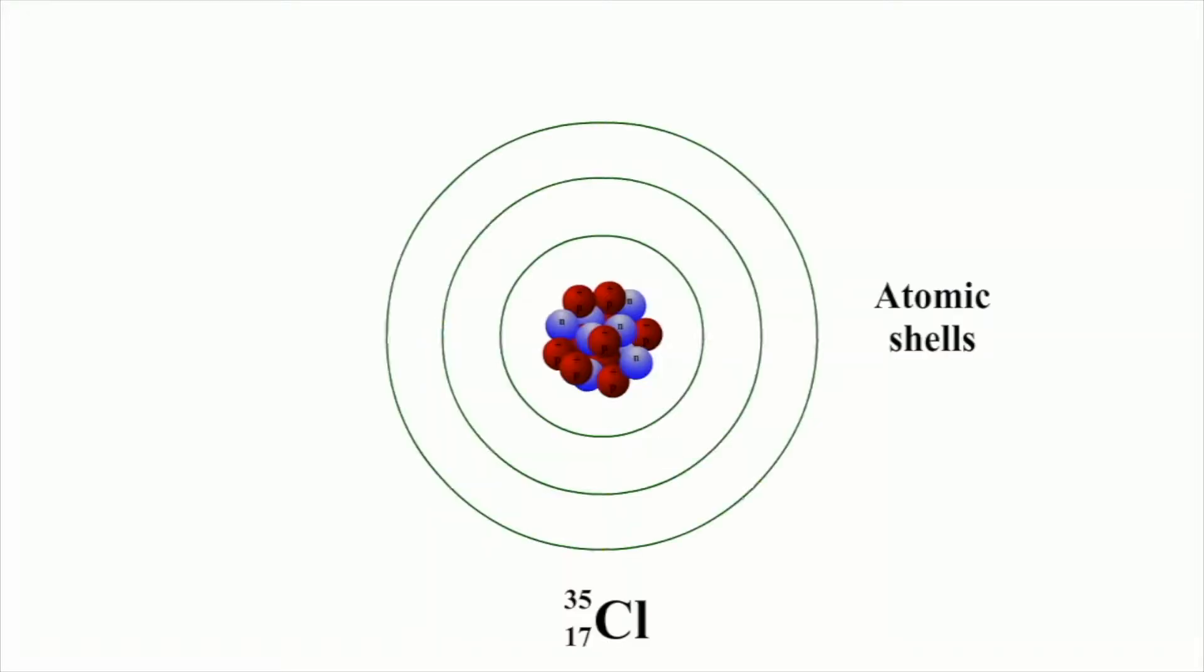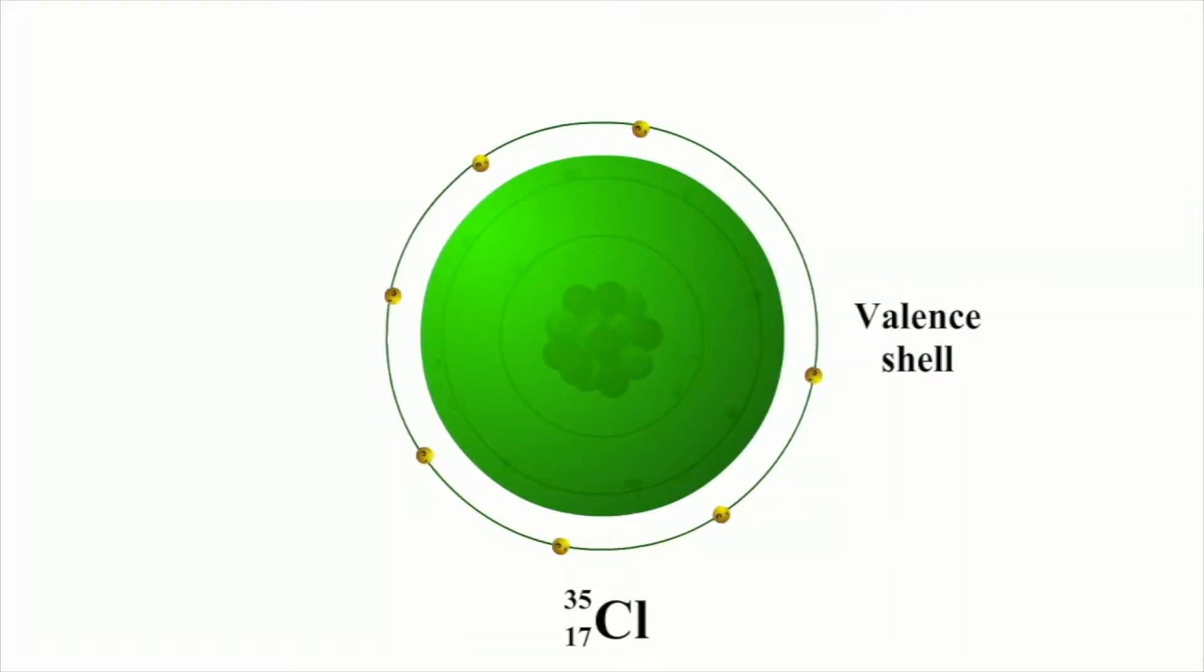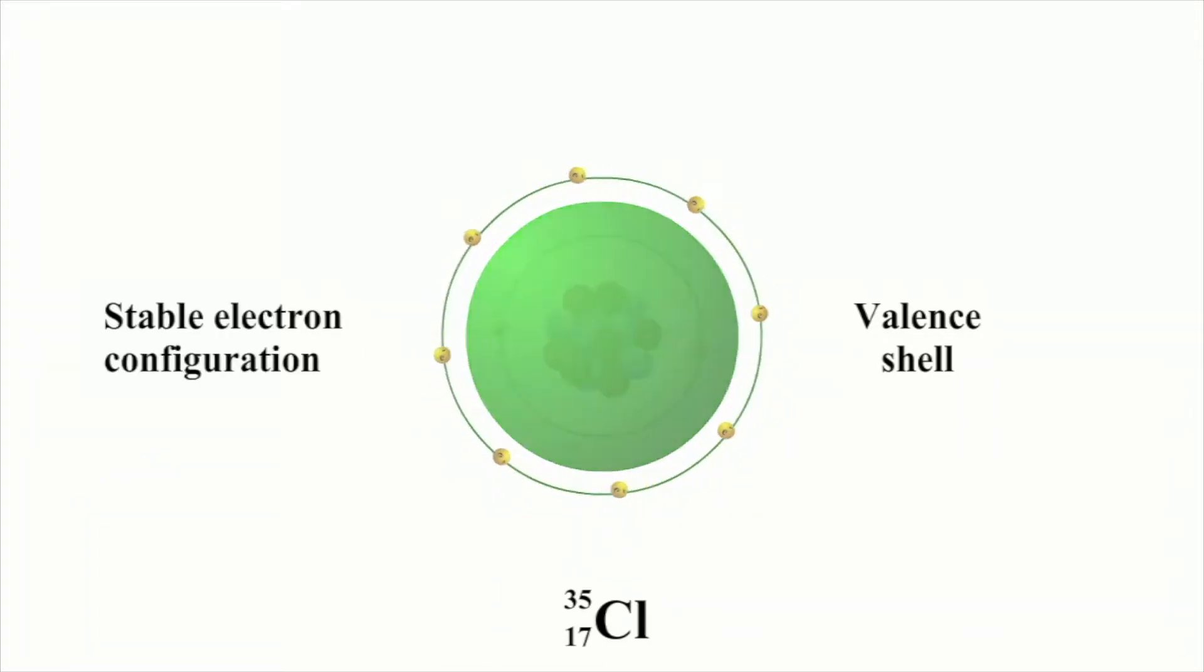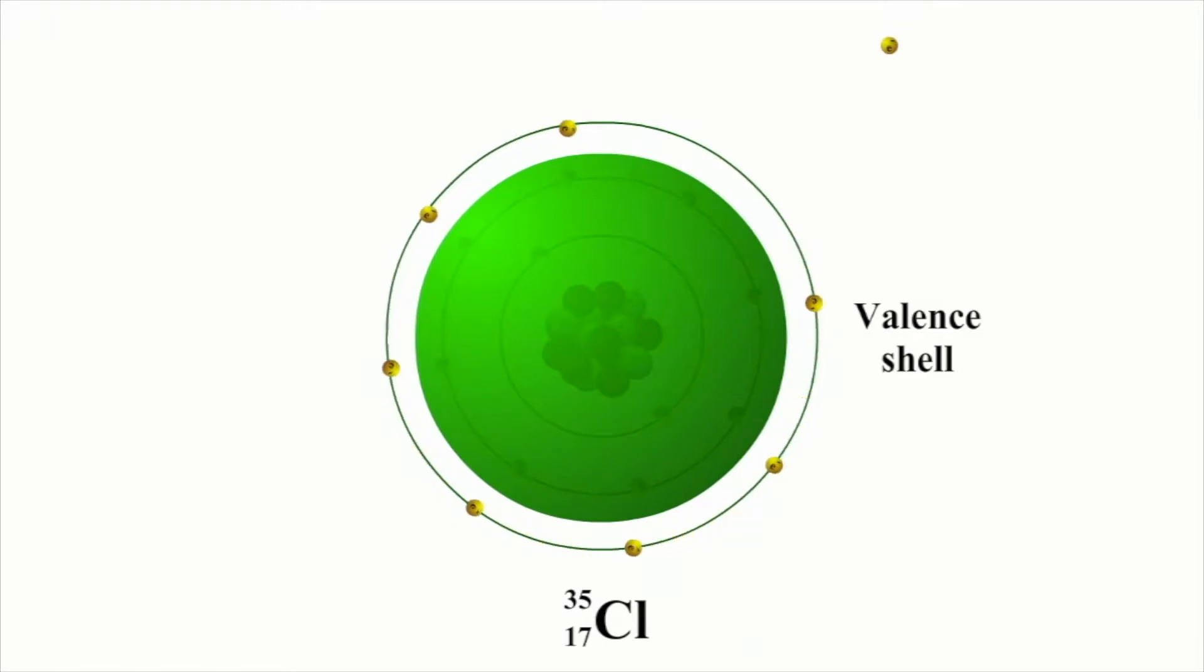An atom of chlorine has seven valence electrons. In this case, the outer shell needs to gain one electron or lose seven to reach a stable configuration. Since gaining one electron requires less energy than losing seven, chlorine gains an electron when it forms compounds.